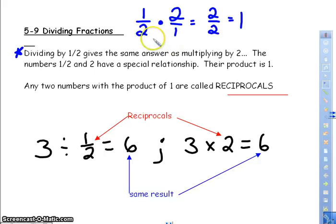So this special relationship has a name. Any two numbers with a product of 1 are called reciprocals. And this is a key word when we are dividing fractions. Reciprocals.